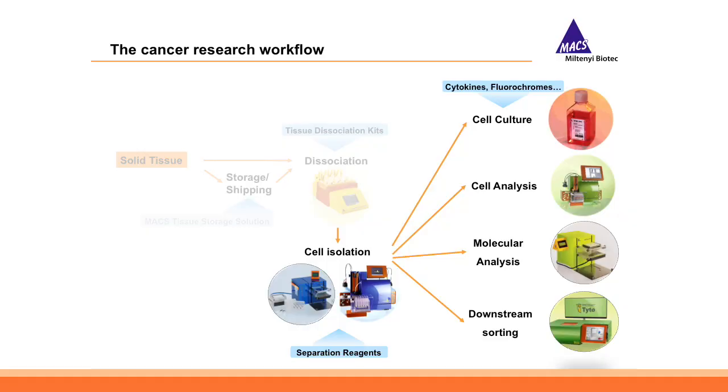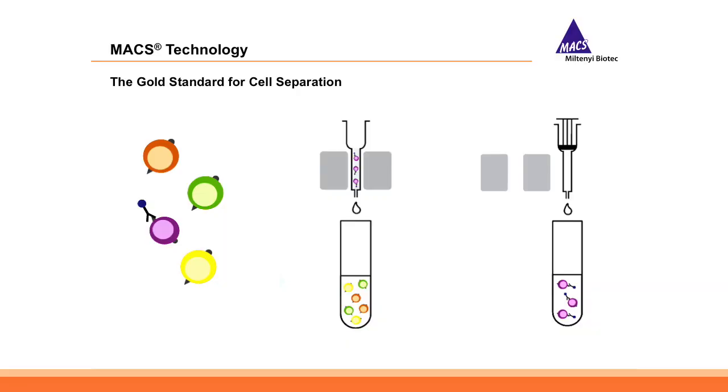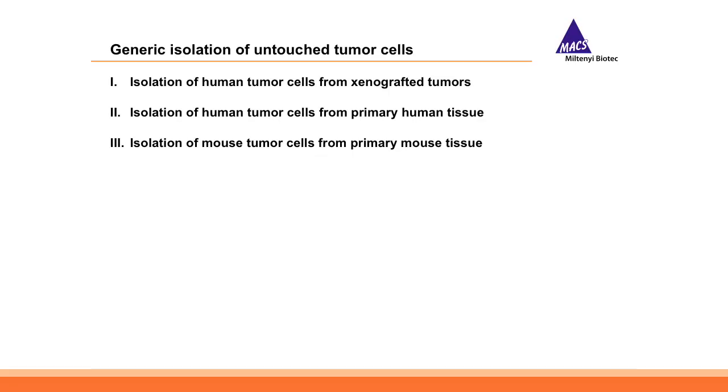When you have your single cell suspension you can proceed with cell isolation of cells of interest. At Miltenyi we mostly focus on magnetic cell separation. You start with a heterogeneous cell population and use monoclonal antibodies specific to a cell surface marker on your target cell, coupled to paramagnetic nanoparticles. When you apply the cell suspension to a column placed in a magnetic field, the non-labeled cells flow through whereas labeled cells stay in the column. You can also do the reverse — negative selection or untouched isolation — using antibody cocktails labeling non-wanted cells, so your cells of interest are in the negative fraction. All methods presented today are negative selection approaches.